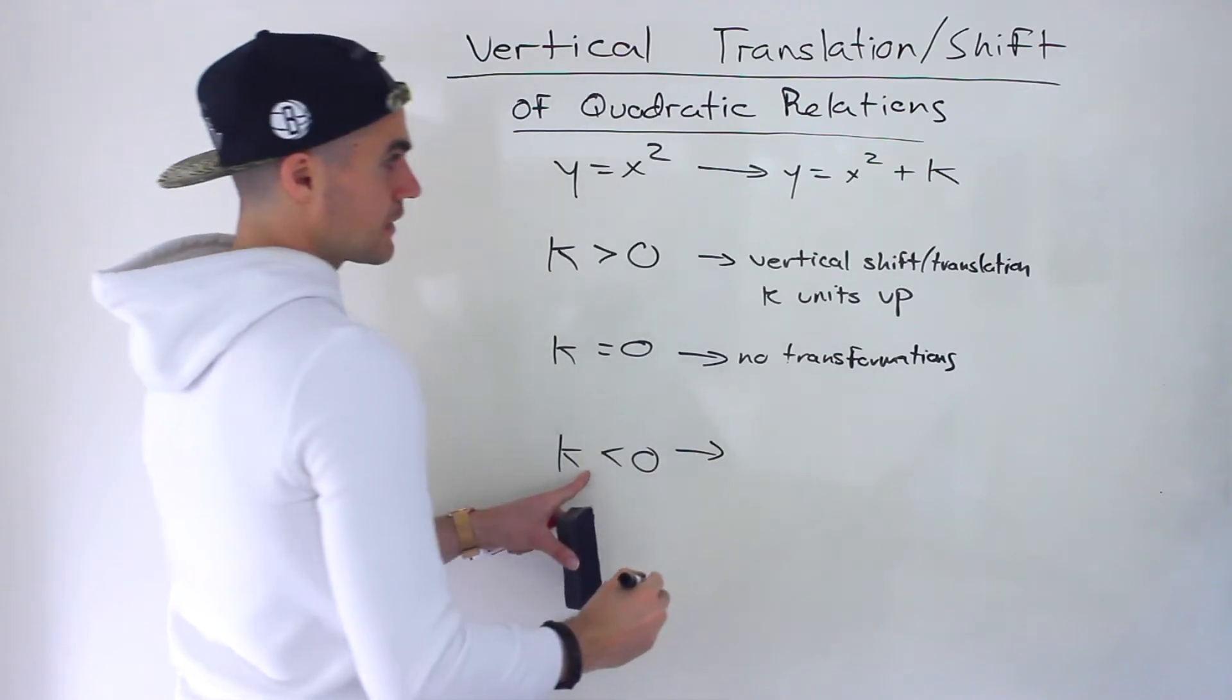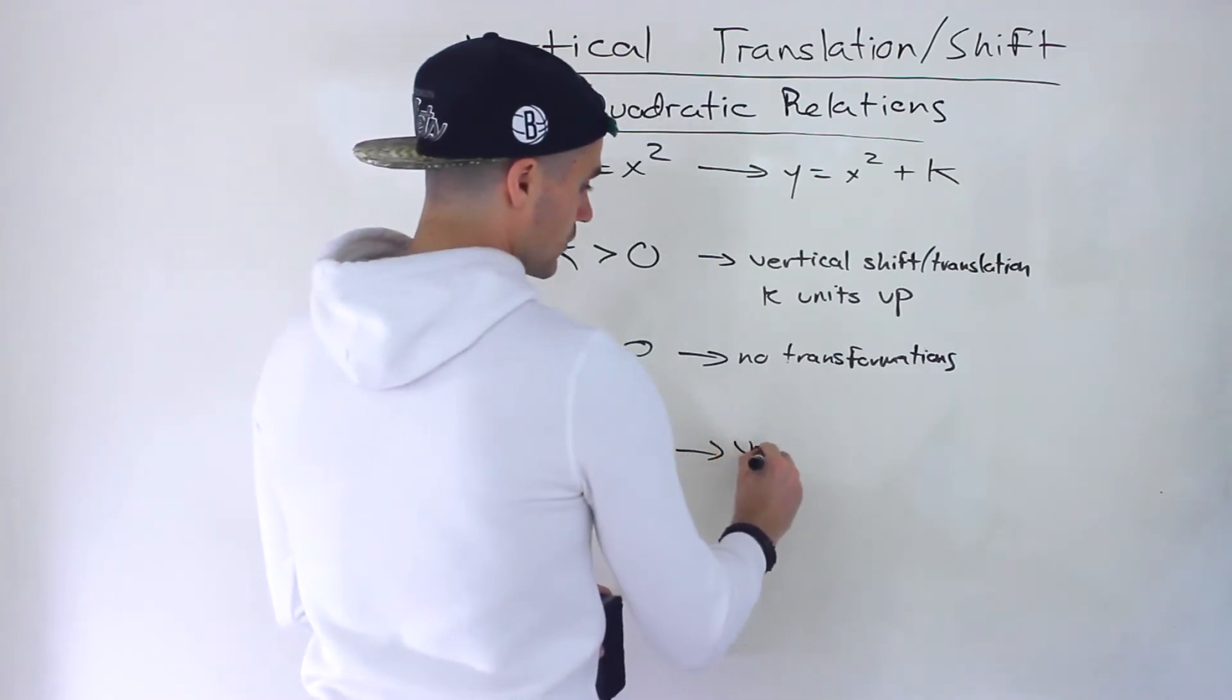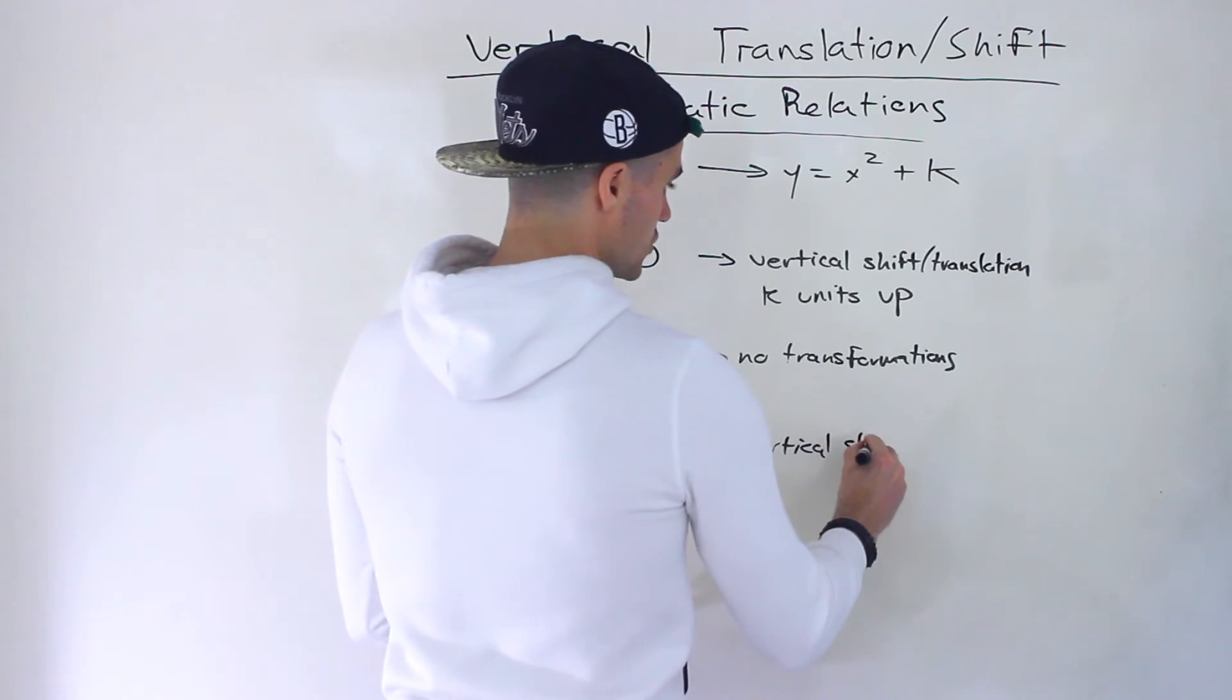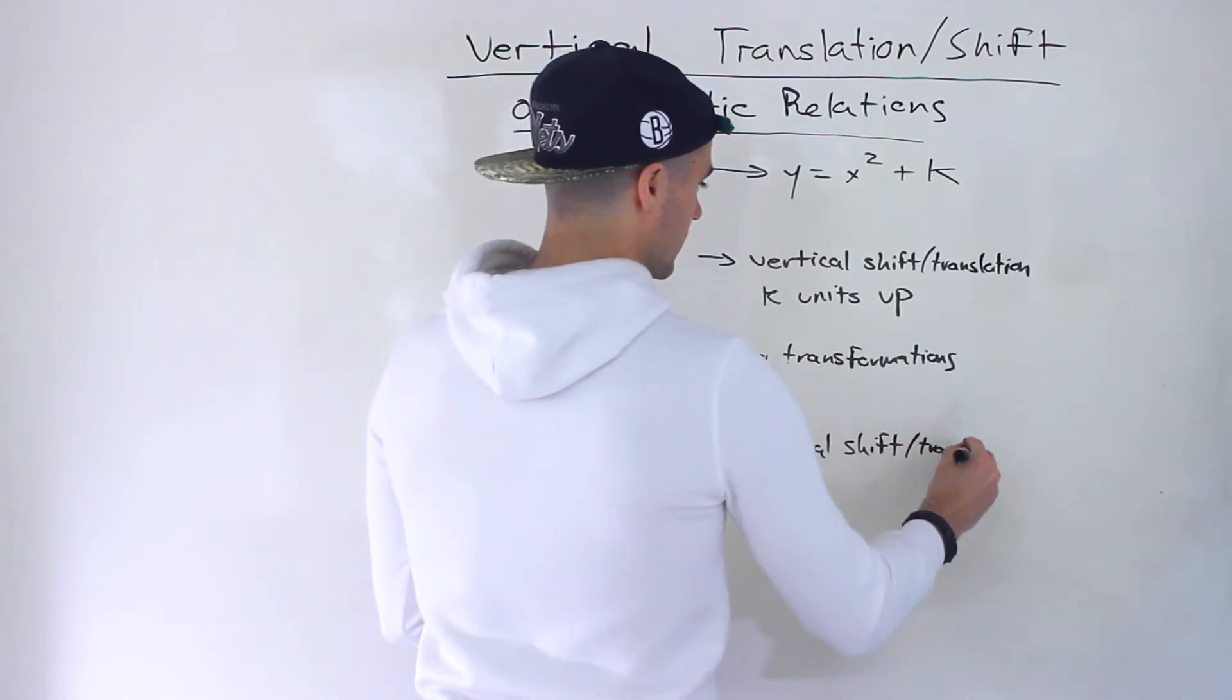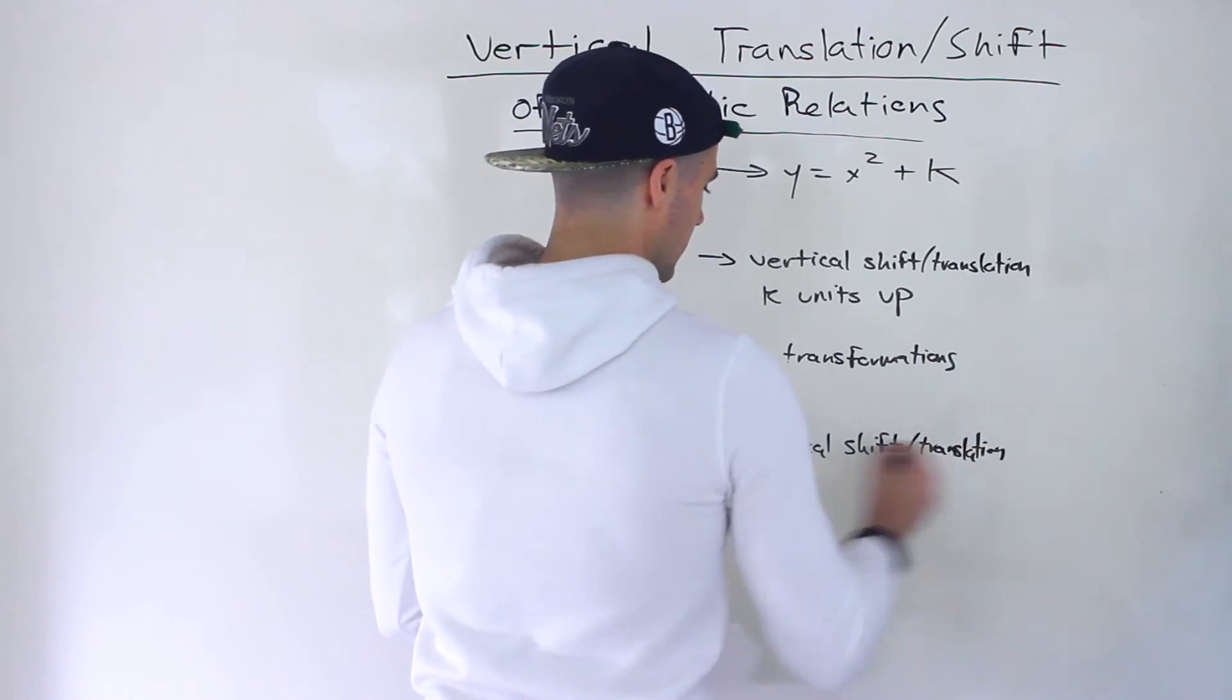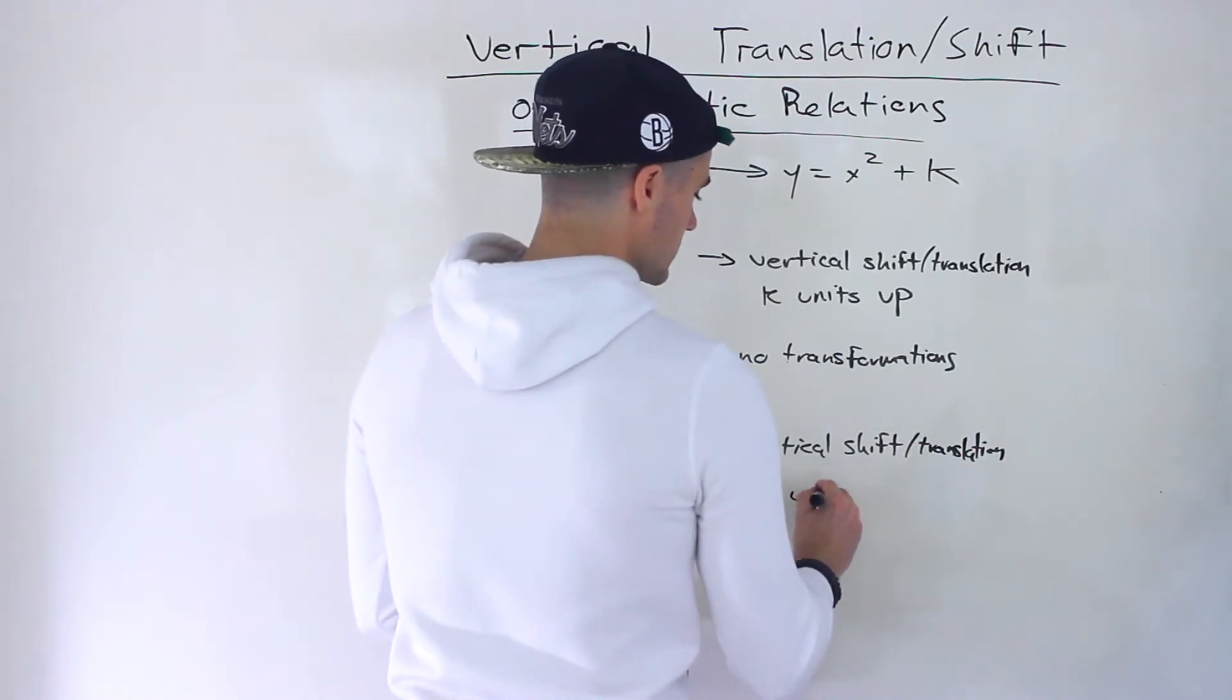And if k is negative, then there's a vertical shift or translation k units down.